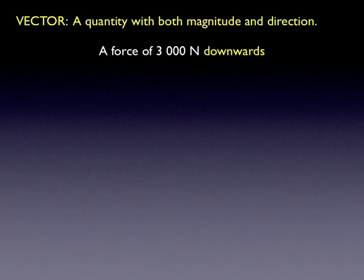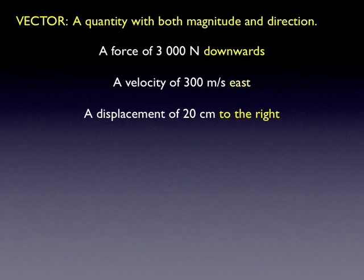Let's talk about vectors. A vector is a quantity with both magnitude and direction. Here are some examples. A force of 3,000 newtons downwards. We have to state the direction. In this case, it's downwards. A velocity of 300 meters per second east. Again, it's a vector. A displacement of 20 centimeters to the right.